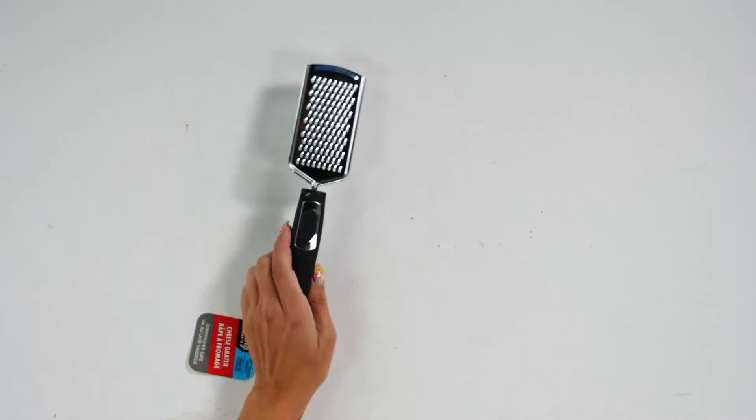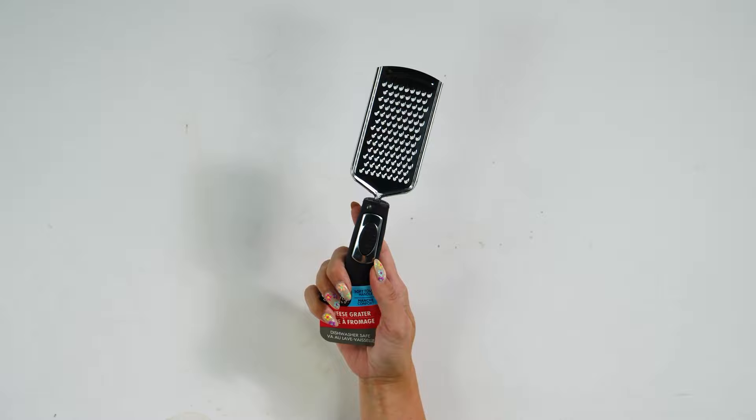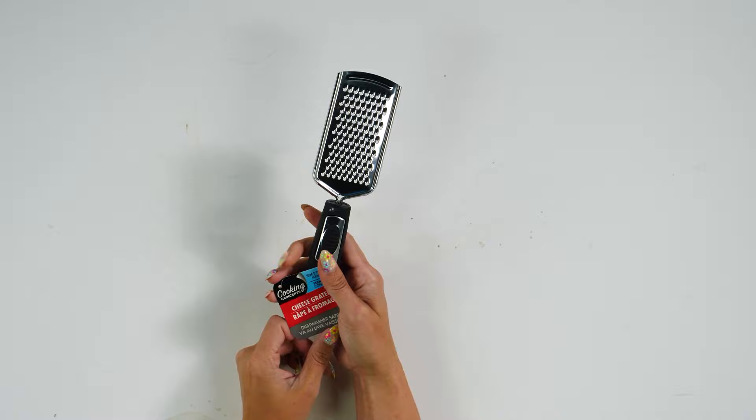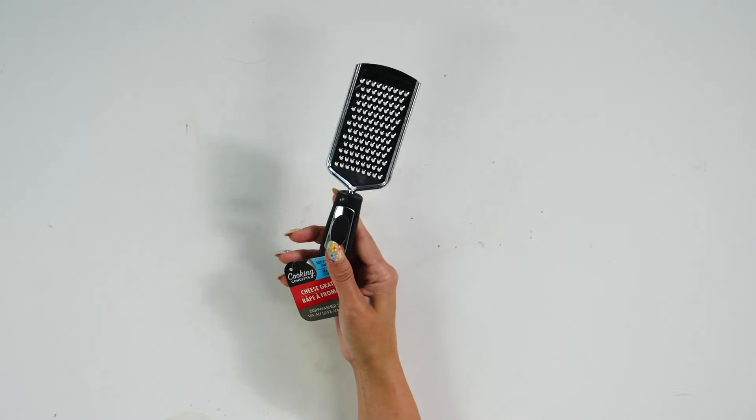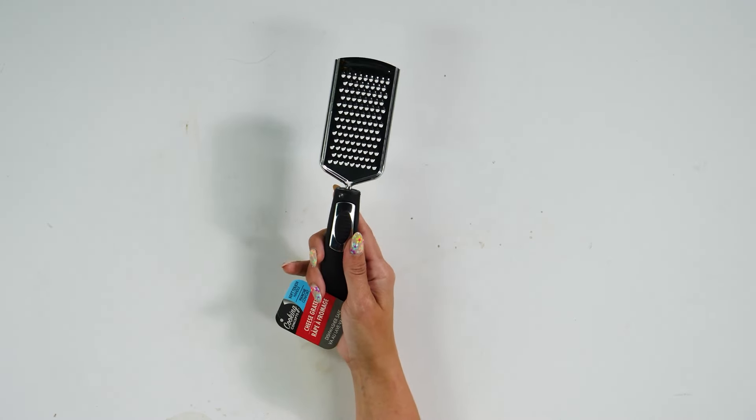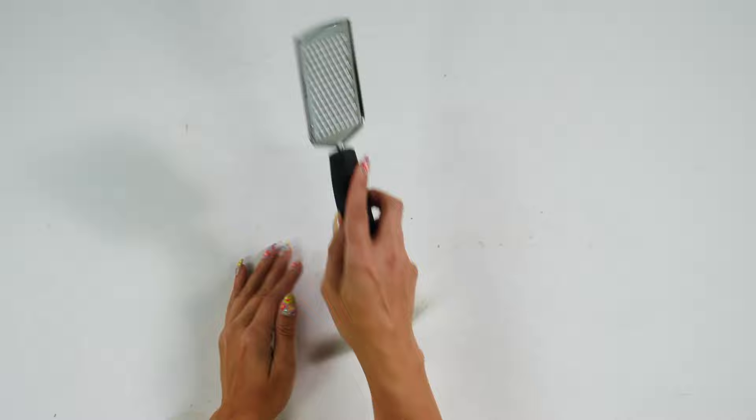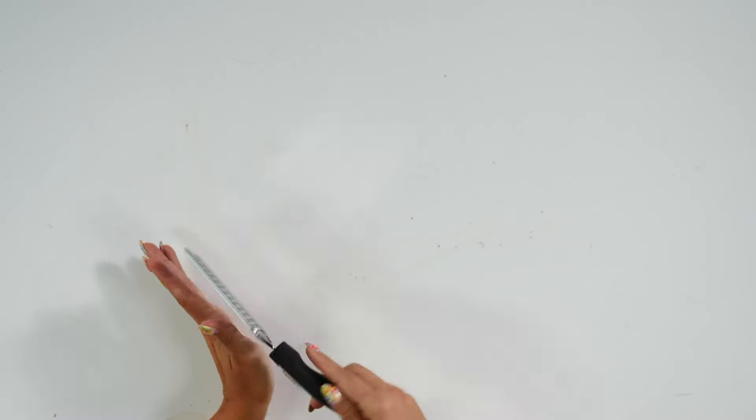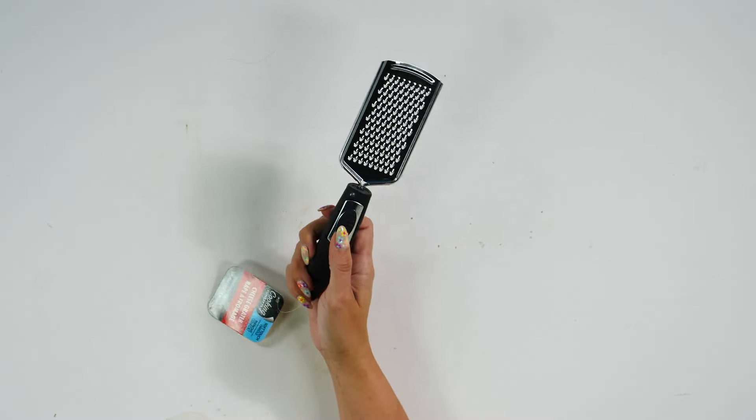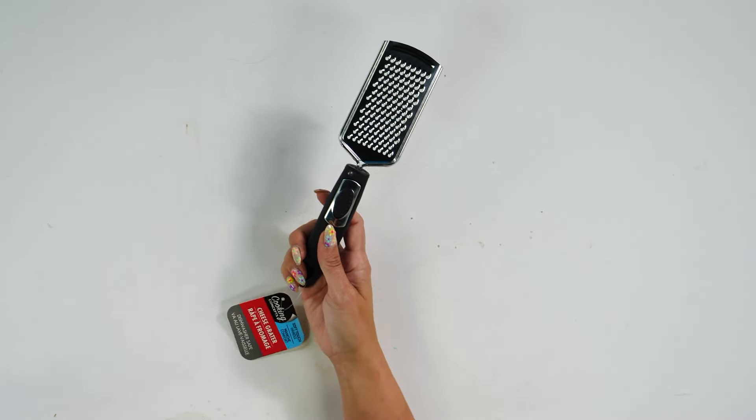Next up is an item found in the kitchen section, and that is this cheese grater. The reason we love having this handheld cheese grater is because it's great for distressing HTV. This is a little hack we've taught on our channel a couple different times. What you can do is if you want a distressed look but still want to use HTV, you can take this cheese grater and grate parts of the HTV before you cut it, then cut out your design.